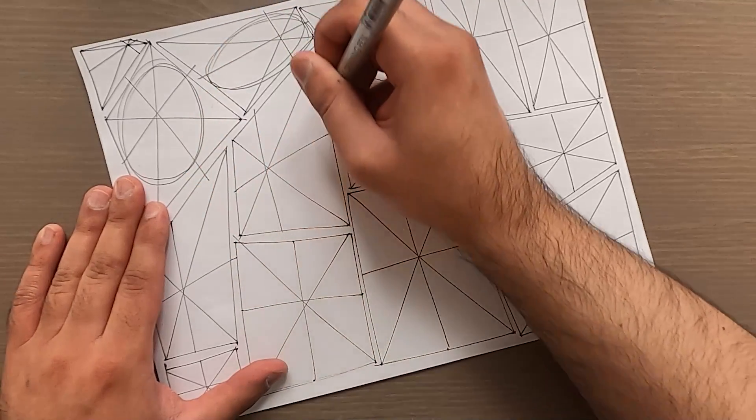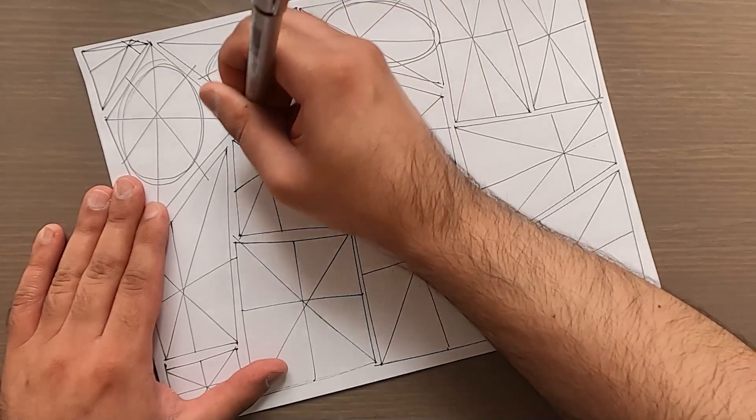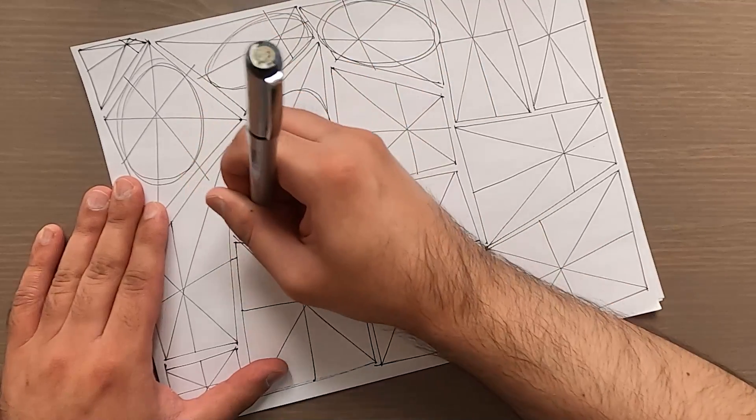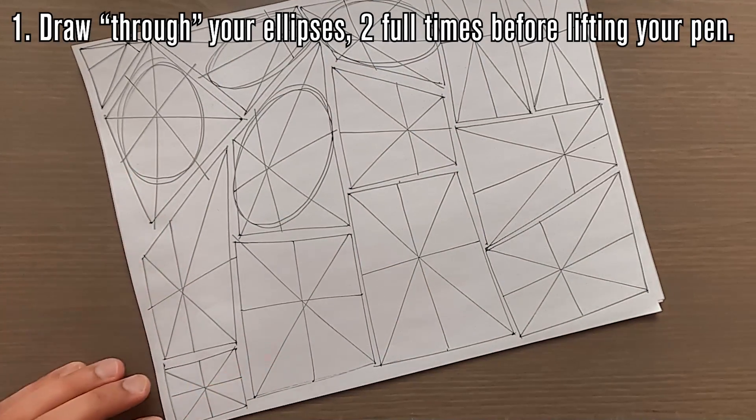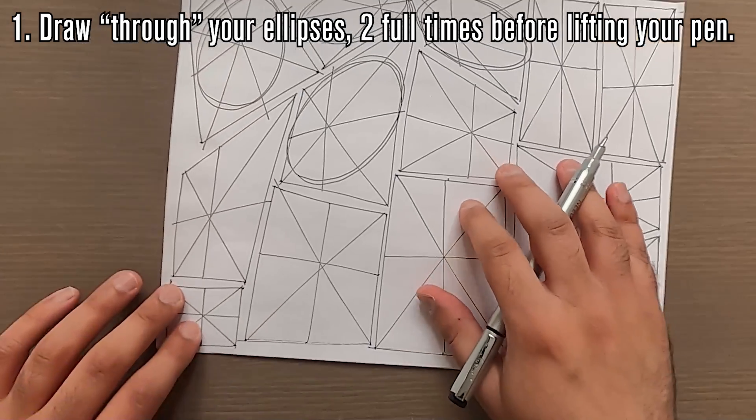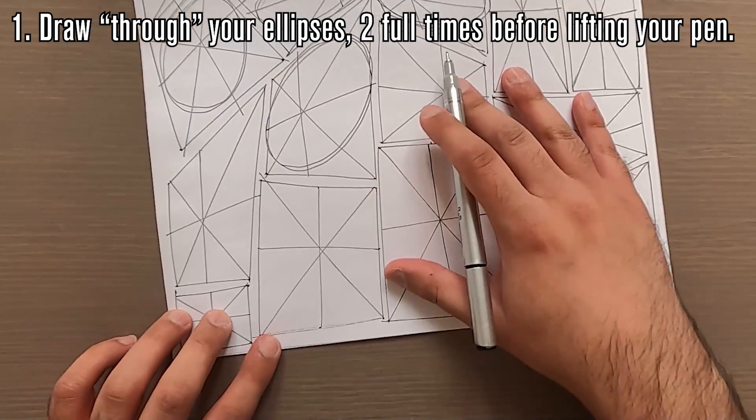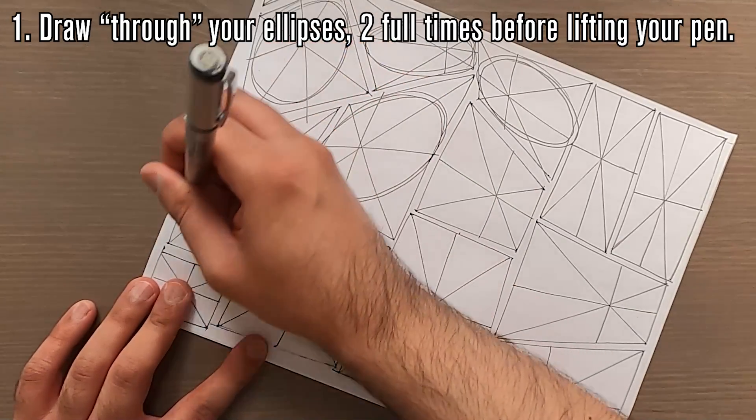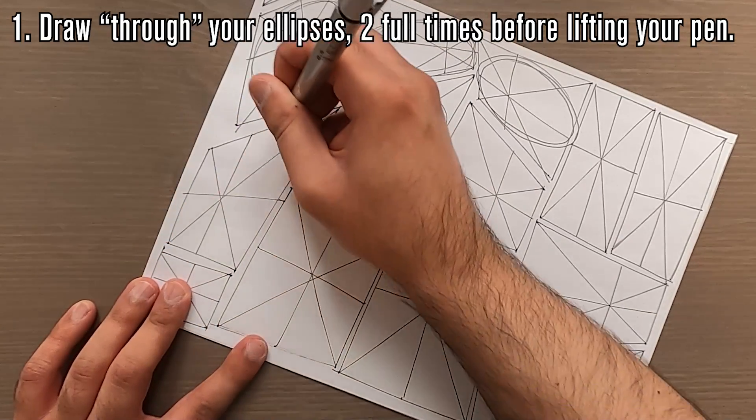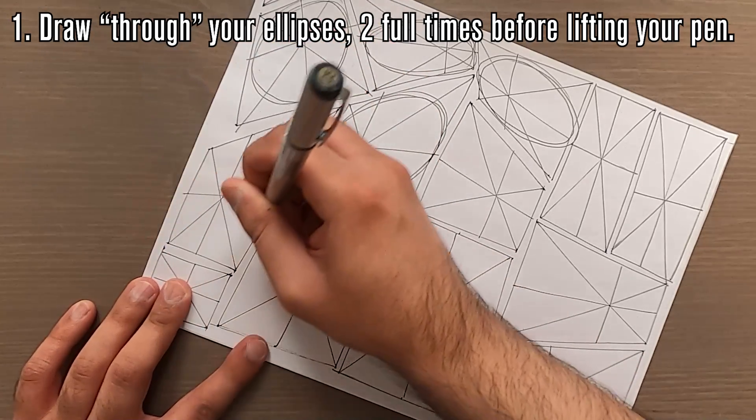Now, there are, as always, some things that will help us achieve these goals, and we've introduced them already. Firstly, we want to be drawing through our ellipses, going around the shape two full times before lifting our pen. As mentioned in the tables of ellipses exercise, this is something we're going to be doing for every ellipse we draw freehand throughout the entirety of this course.